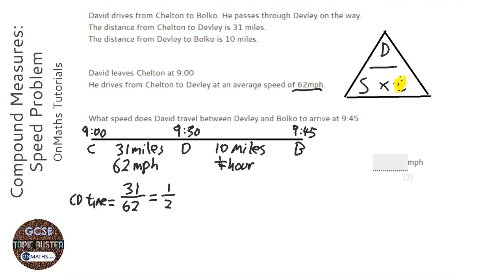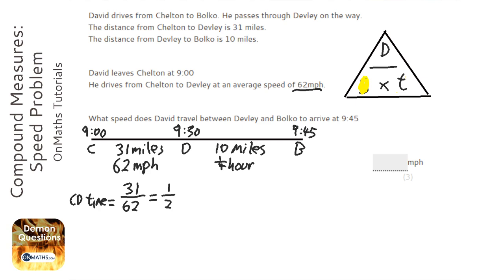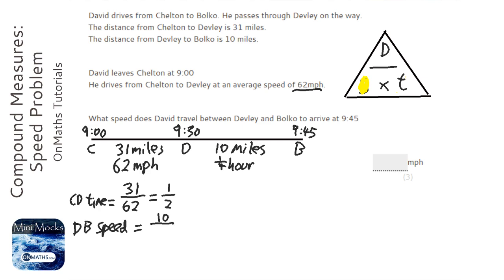So looking at the speed-distance-time triangle again. What are we going to cover up? Well, we're looking for the speed. So I'm going to cover up speed — that's distance over time. So the DB speed is distance, which is 10, over time, which is a quarter of an hour.